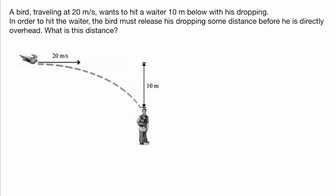Hello, welcome back. In today's lesson we're looking at motion in two dimensions, in particular projectile motion. We're going to consider a bird that is moving and releasing its dropping. A bird traveling at 20 meters per second wants to hit a waiter 10 meters below with its dropping. In order to hit the waiter, the bird must release its dropping some distance before it's directly overhead. What is this distance?